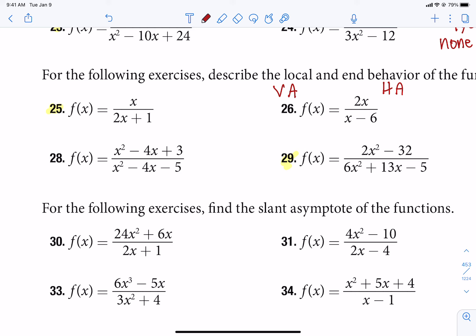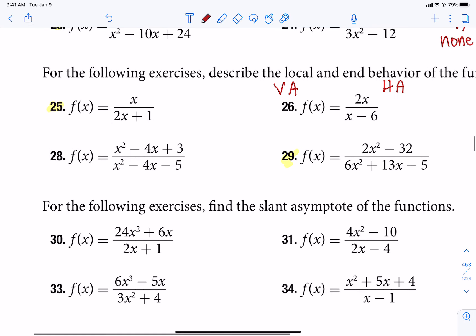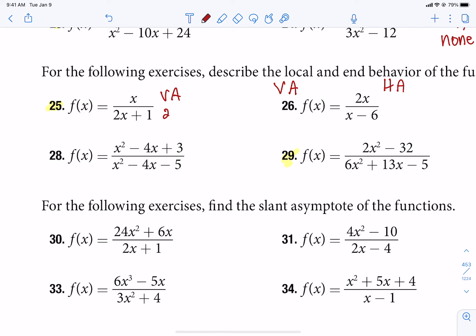So let's do 25. So it's completely factored. No factor on top, exact match on the bottom. So we don't have to worry about a hole in there, but there is a vertical asymptote. When 2x plus 1 equals 0, solve. So there's a vertical asymptote at negative 1 half. We're going to have to describe what happens at negative 1 half.